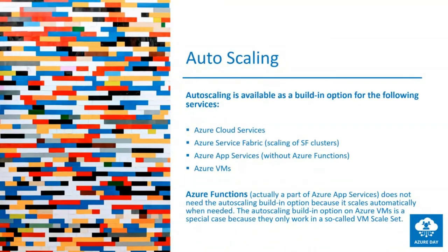You can scale out or scale up, but make sure you make use of auto scaling. Auto scaling is built in to some Azure services — for example, in Azure App Service you can enable the auto scaling option so when your workload grows, your resources will scale automatically. This is true for most Azure resources; even for Azure VMs, but be aware that for VMs you need to work with VM Scale Sets. Before you create your VM, make sure you create a VM Scale Set and place those VMs in there. And be aware of the costs that come with these auto scaling options.